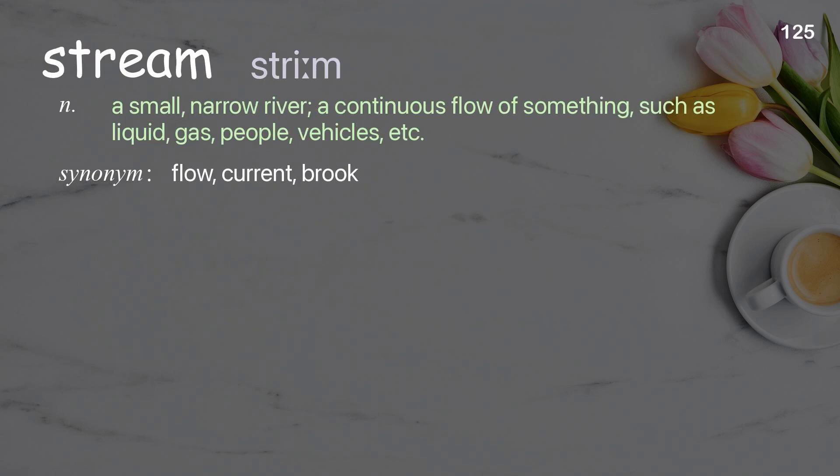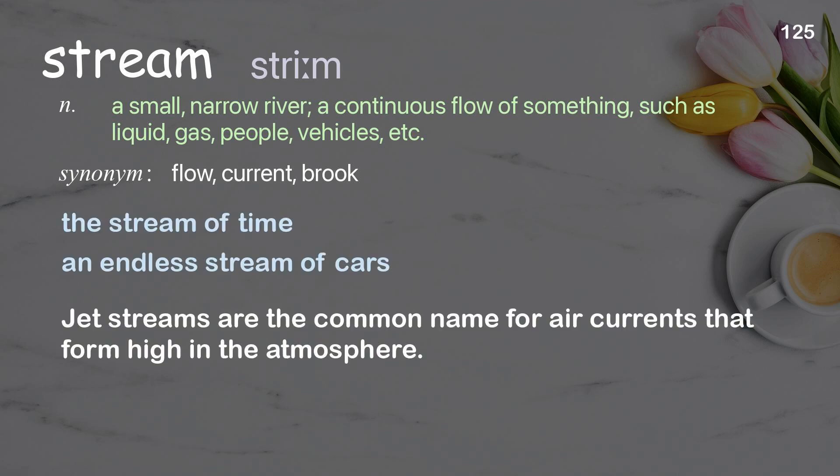Stream: a small, narrow river; a continuous flow of something, such as liquid, gas, people, vehicles, etc. Examples: the stream of time; an endless stream of cars. Jet streams are the common name for air currents that form high in the atmosphere.